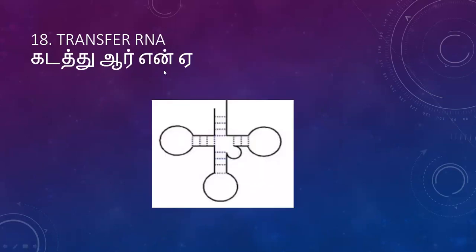Then, structure of tRNA. The main function of tRNA is to carry amino acids from the cytoplasm to the site of protein synthesis. It has an amino acid attachment site, anticodon, variable arm, T-arm, and D-arm.